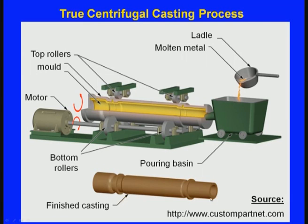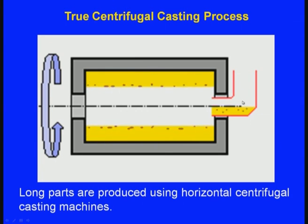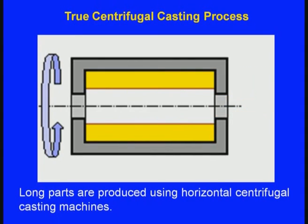After solidification, the rotation of the mould stops and we get a solidified cylindrical hollow casting. The motor drives the metallic mould. We can see the ladle, the pouring basin, and the cylindrical metallic mould supported on bottom rollers and top rollers. As the molten metal is poured, the mould rotates until solidification is complete, and the metallic mould is then detached to yield the solidified casting.